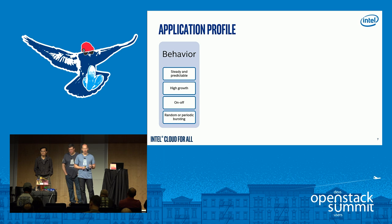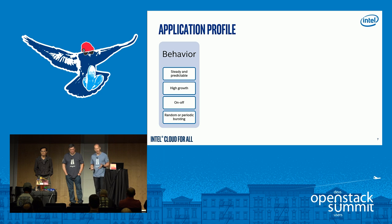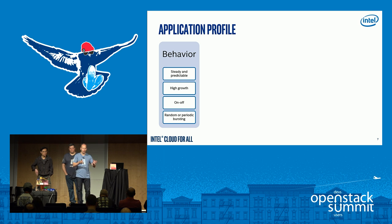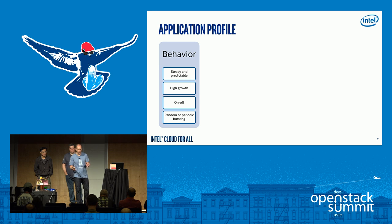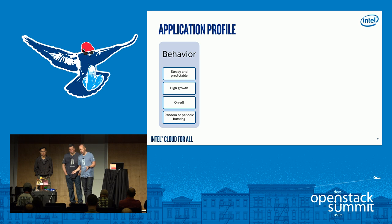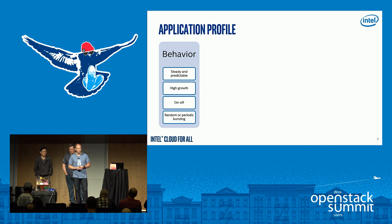IoT solutions are not always connected — sometimes they're on, sometimes they're off. If you have a shipping application going through the mountains, you need to know how to track, re-sync, and back up data to bring everything back online. You need to plan for that and potentially do analytics at different areas. Then there's bursting: periodic bursting is easy to plan for, but random bursting is really difficult. You may need to implement a hybrid cloud solution to help with external bursting.